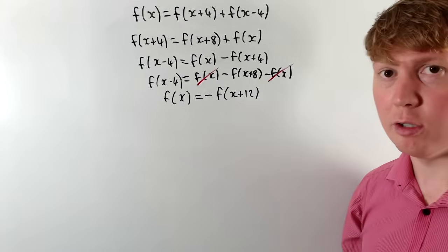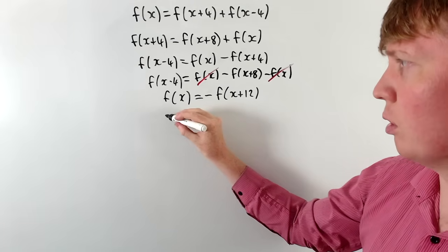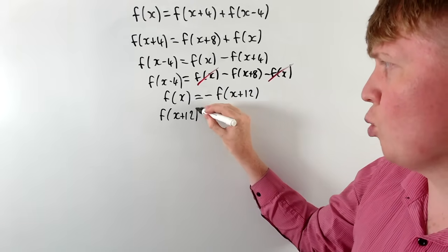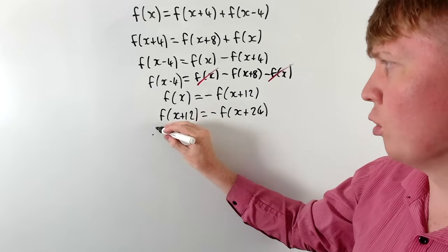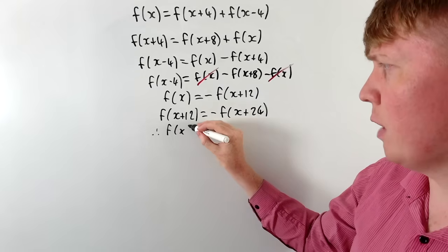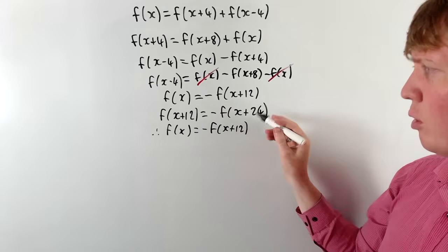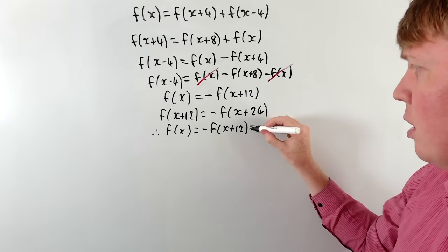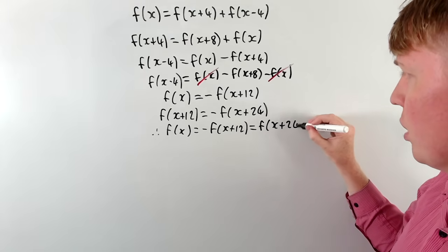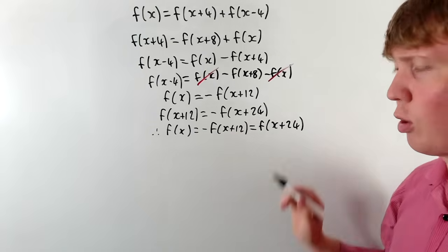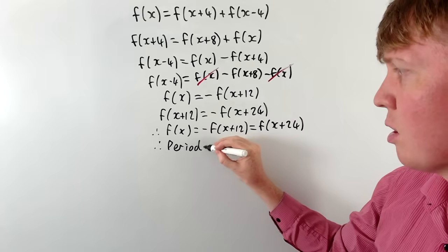This is really cool: f(x) is the negative of f(x+12). So f(x+12) = -f(x+24). Since f(x) = -f(x+12) and f(x+12) = -f(x+24), taking the negative of f(x+12) gives us f(x) = f(x+24). Therefore, we see that the period is 24.